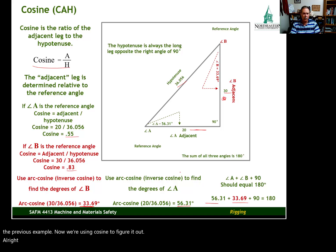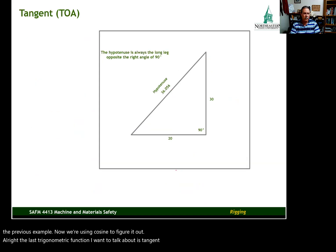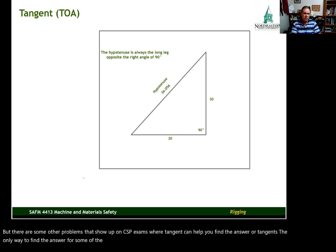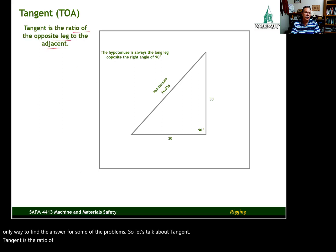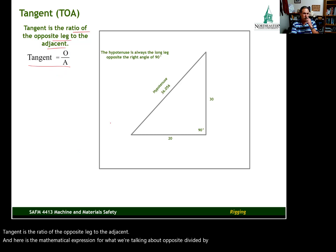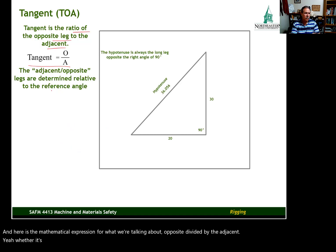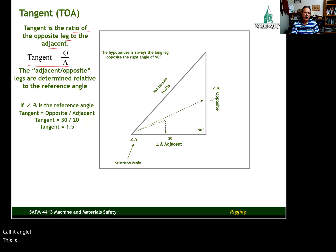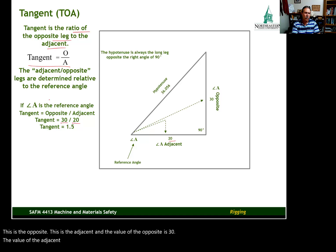The last trigonometric function I want to talk about is tangent. Tangent will not be used for calculating sling loading, but there are some other problems that show up on CSP exams where tangent can help you find the answer. Tangent is the ratio of the opposite leg to the adjacent — mathematically, opposite divided by adjacent. If A is our reference angle, opposite is 30 and adjacent is 20, so tangent equals 1.5.